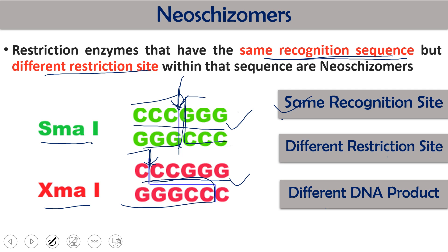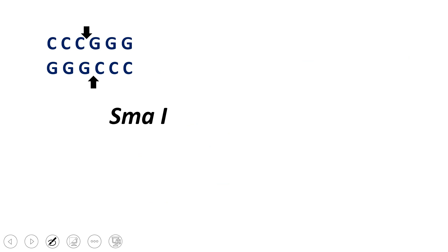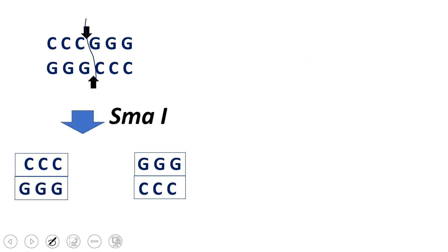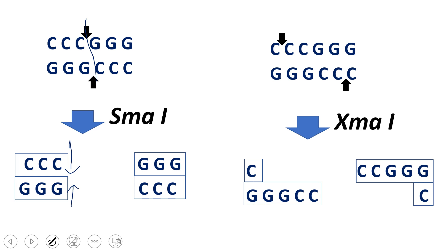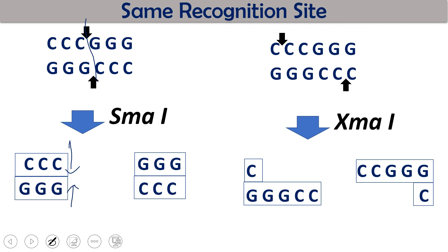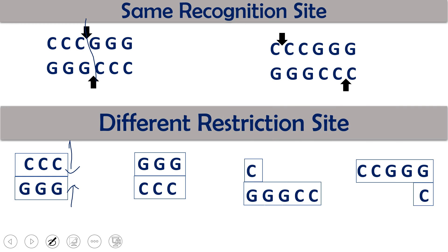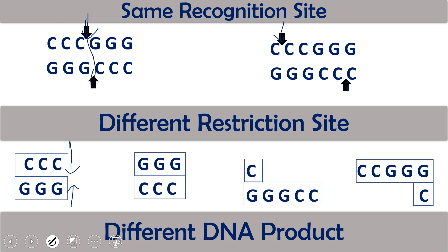Looking in detail: CCCGG is the recognition site for SmaI. SmaI cuts in the center, so we get two blunt end DNAs. The same recognition site CCCGG is recognized by XmaI, but XmaI does not cut in the center — it digests between the first and second nucleotide. As a result, we get a staggered or cohesive end DNA. So the three points for neoschizomers: same recognition sequence, different restriction sites, and different products — blunt end from SmaI and cohesive end from XmaI.